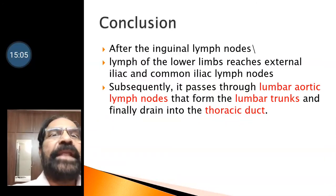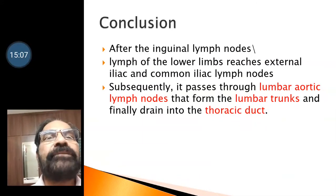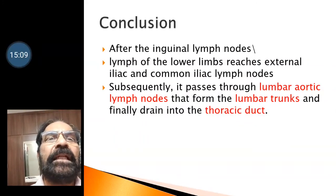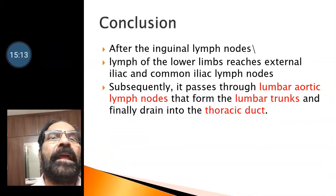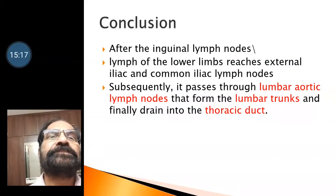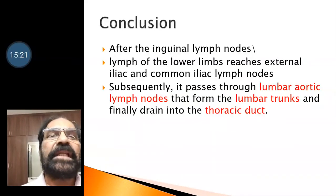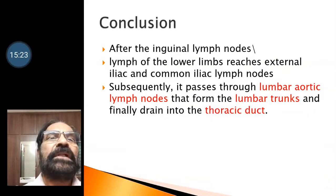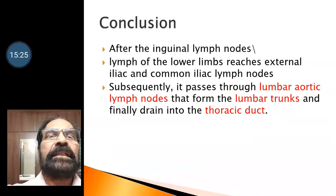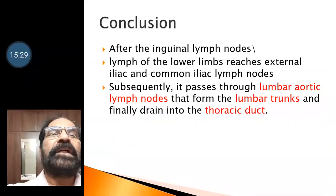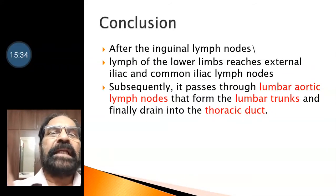In conclusion, after the inguinal lymph nodes, lymph goes to the external iliac, then common iliac lymph nodes. Subsequently, it passes through lumbar aortic lymph nodes that form lumbar trunks and finally drain into the thoracic duct.